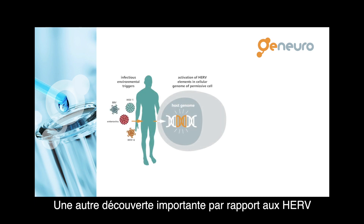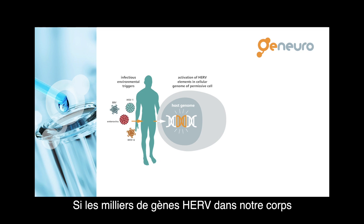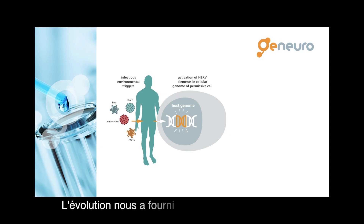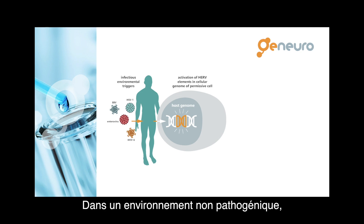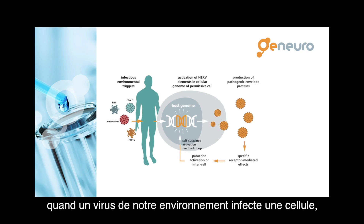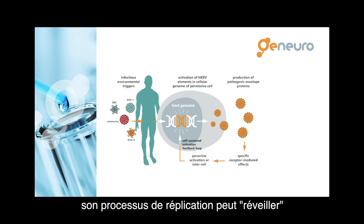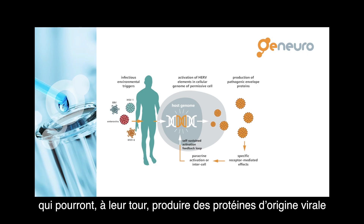Another important discovery made on HERVs is the mechanism for their expression. If thousands of HERV genes were producing viral proteins all the time, we would simply not be alive. Thus, evolution has provided us with several mechanisms to repress the expression of proteins by HERVs. In a non-pathogenic environment, HERVs should not be expressed. But what we also know today is that when a virus from our environment infects a cell, the replication mechanism it uses will wake up some of its HERV cousins in our DNA, which will then also be able to encode for proteins.